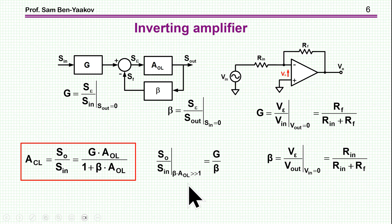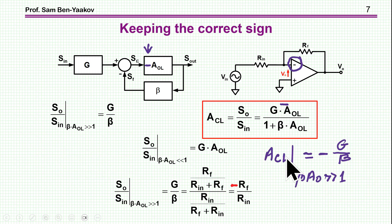And we know that when beta A open loop is larger than 1, then the gain should be G over beta, that is this over this. So when we do this, here is G, and here is beta, we get indeed R f over R in, as we should.